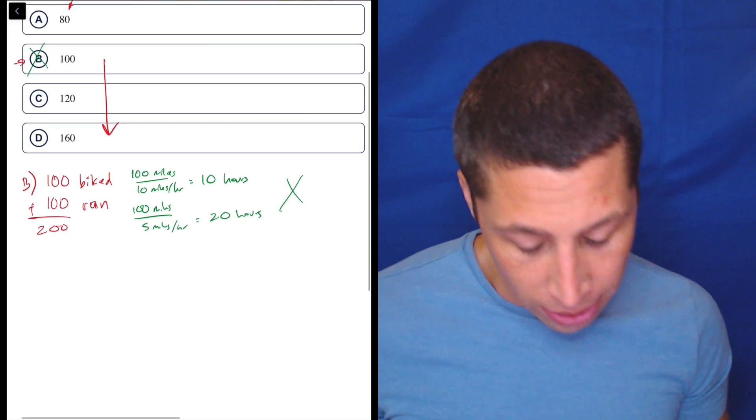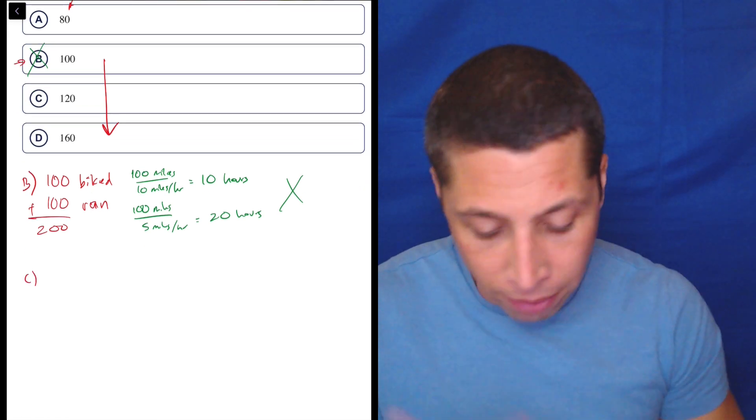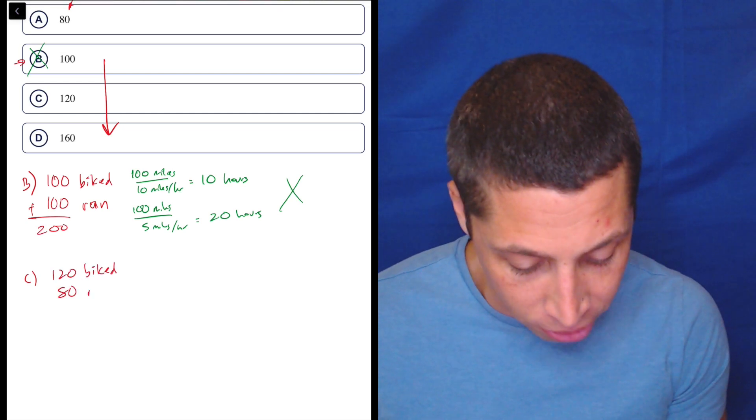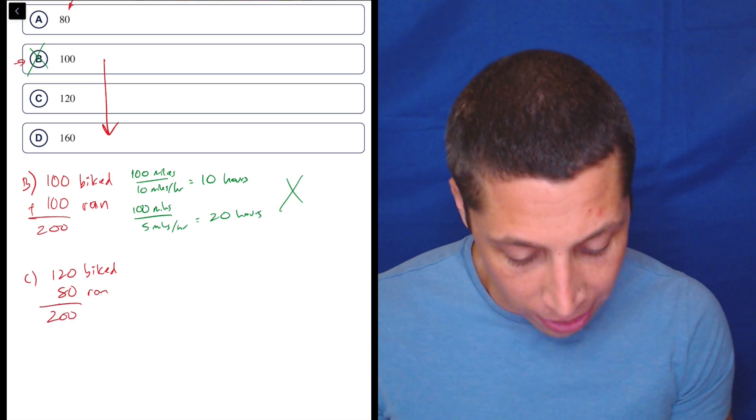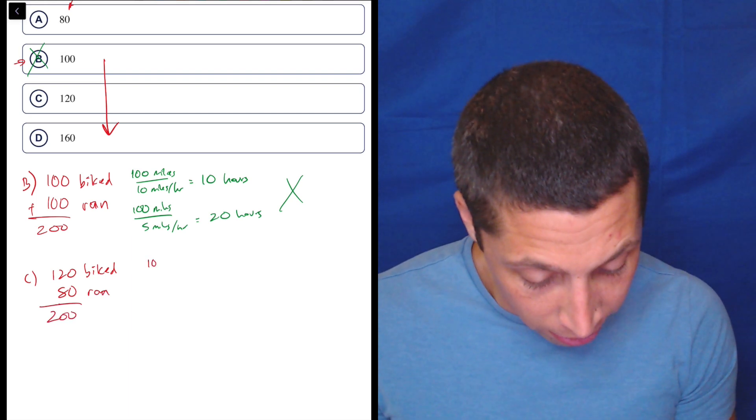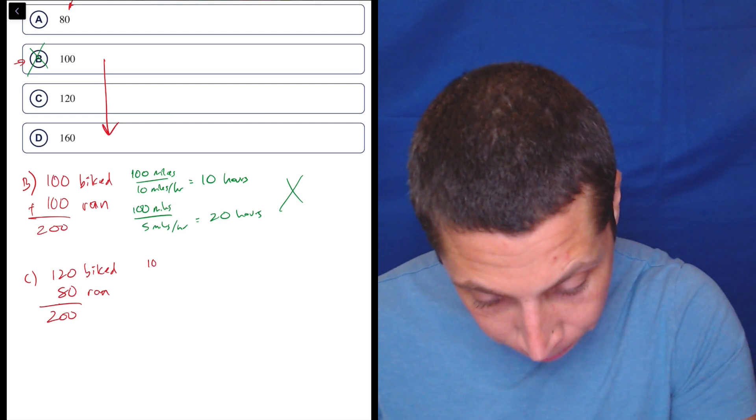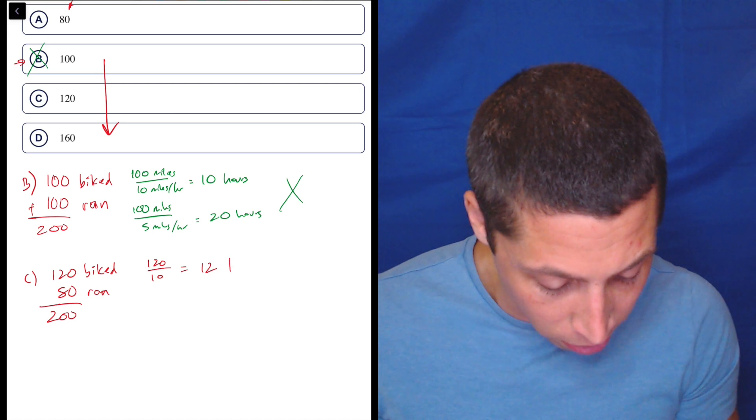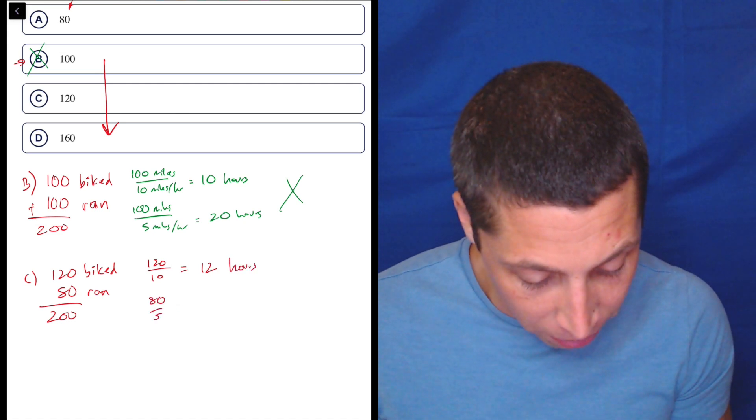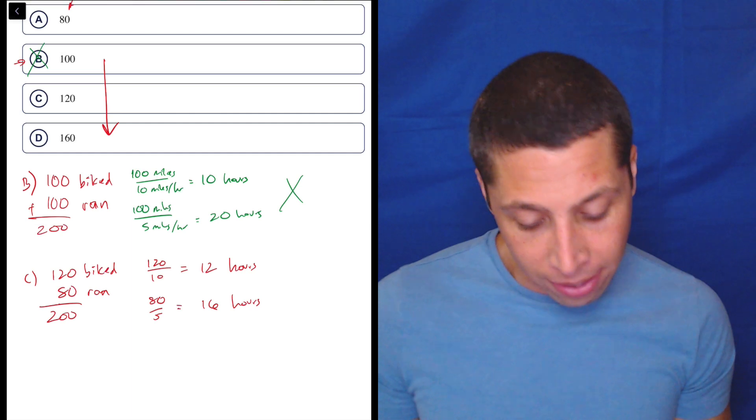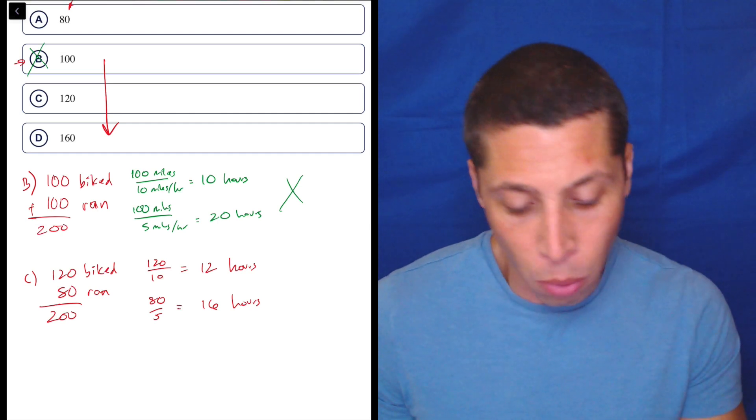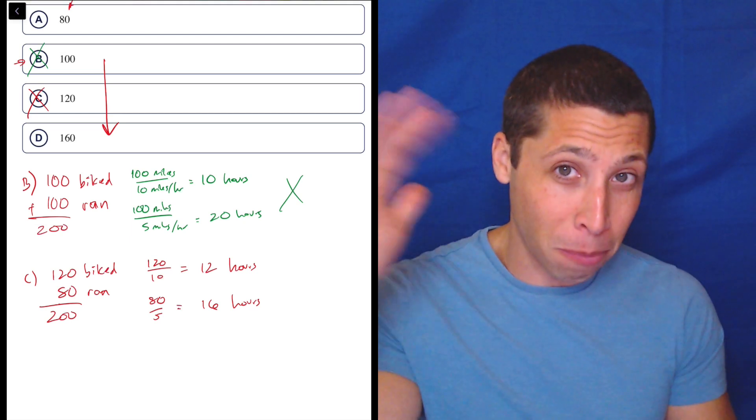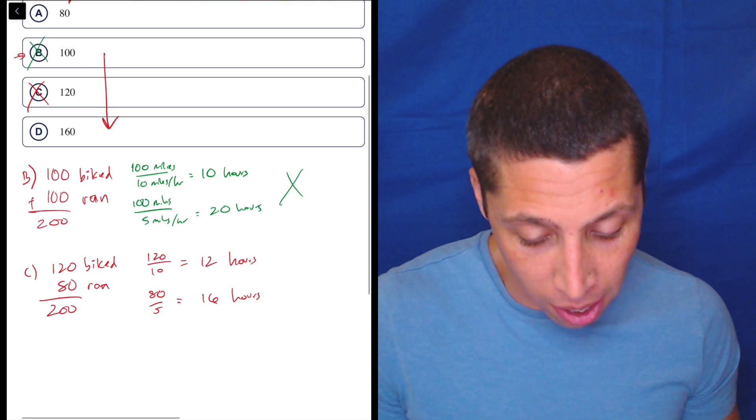So literally I'm just going to kind of repeat this process. I don't even need the question anymore. So I'll just do C. This is 120 biked, which means that there's 80 that she ran because that has to add up to 200. And then 120 biked miles divided by 10 is 12 hours. And this is 80 divided by five, that's 16 hours. So again, it doesn't quite match up. It needs to be more. So we're getting closer. 10 to 20 is a big jump, but 12 to 16 is a smaller jump. So maybe if we go to 160, we'll kind of finish it off.